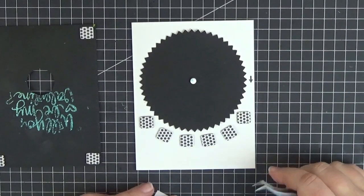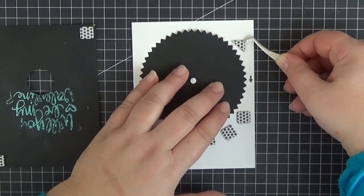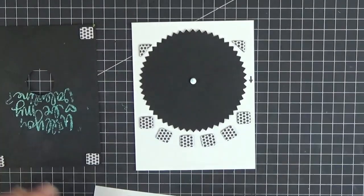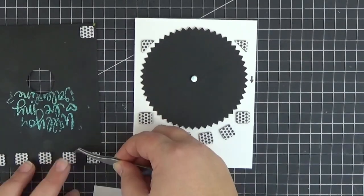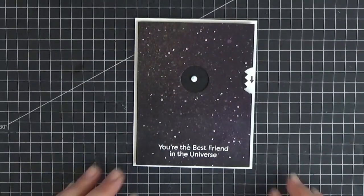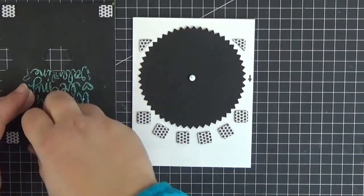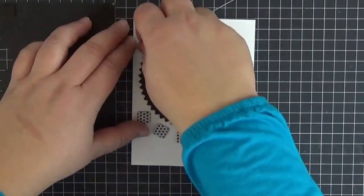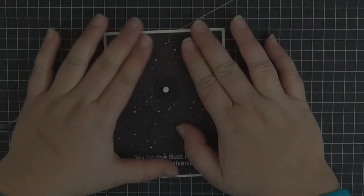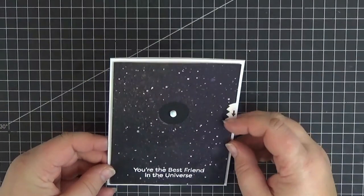Now we just need to add foam tape to the back of our panel, avoiding the disc of course. I'm using thin foam squares because I'm running out of my beloved scotch tape. So here I'm peeling off the release paper and next I'm carefully adhering the panel to the card base.